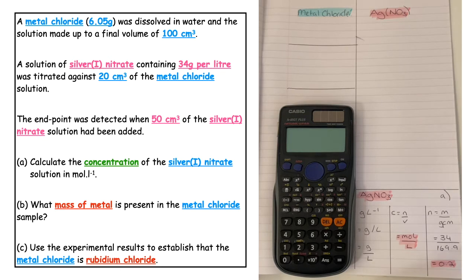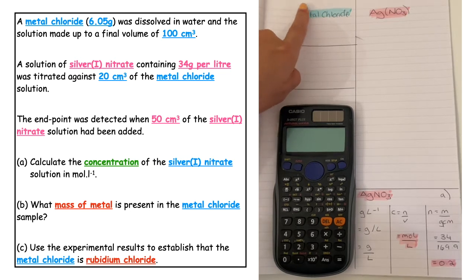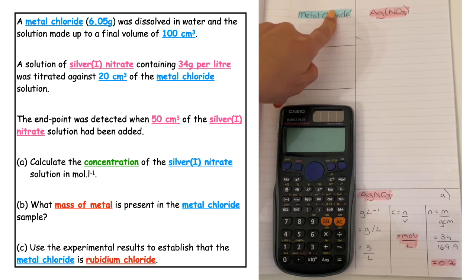Part B of the question wants you to calculate the mass of metal which is present in the metal chloride sample. When we're doing most questions in advanced higher chemistry, we use the numbers backwards.